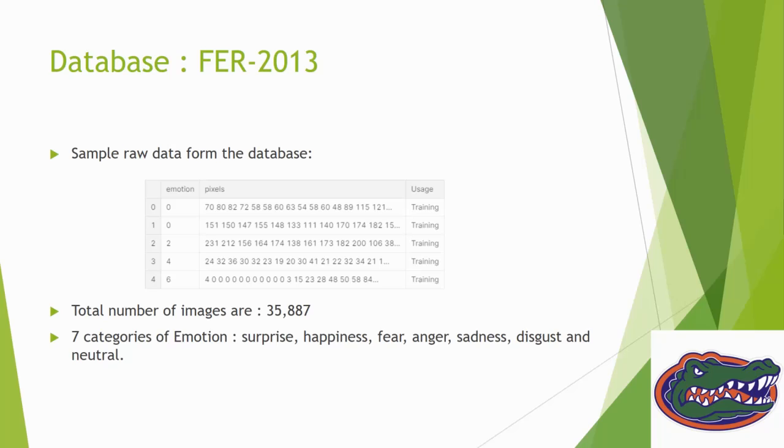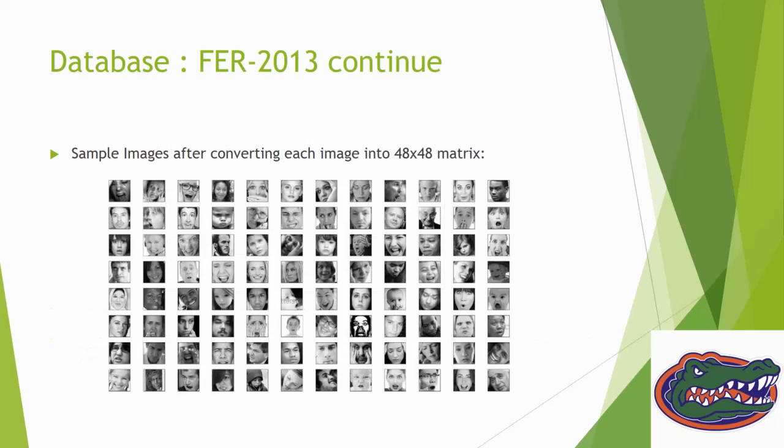There are seven categories of emotion in this database: surprise, happiness, fear, anger, sadness, disgust, and neutral. After pre-processing, these pixel value strings are converted into 48 by 48 matrices for each image. As you can see, these are grayscale images with frontal view. We don't need to do padding or elongation, so it's in very good shape.